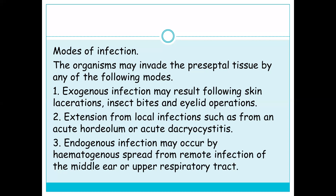Acute dacryocystitis is basically an infection of the lacrimal sac secondary to obstruction of the nasolacrimal duct at the junction of the lacrimal sac. Third, endogenous infection may occur by hematogenous spread from remote infection of the middle ear or upper respiratory tract.